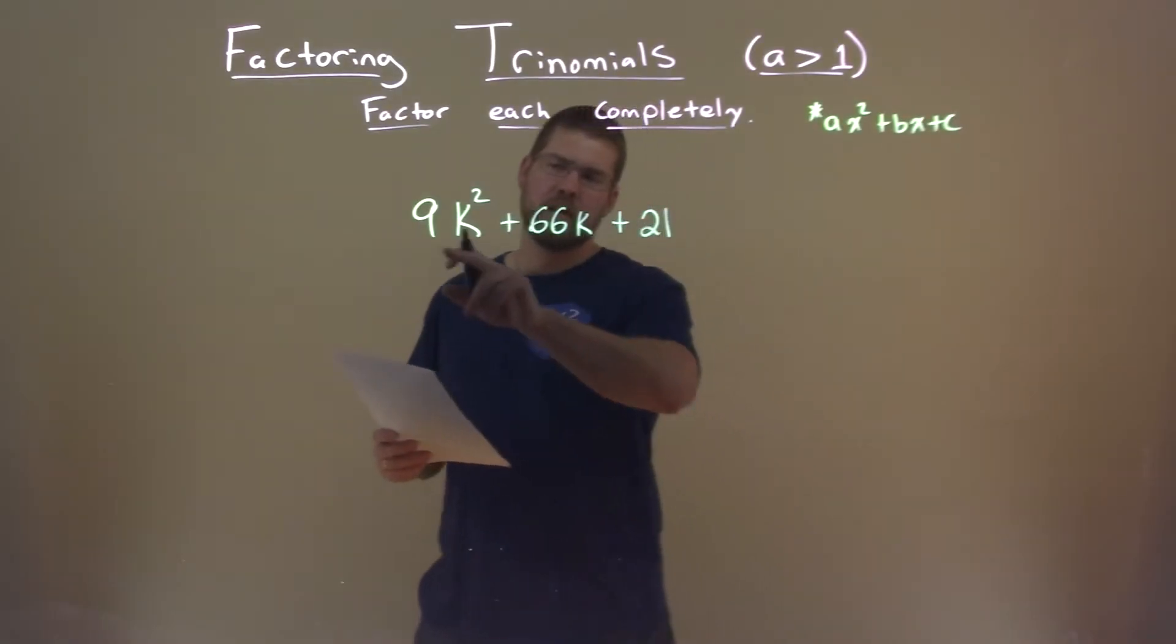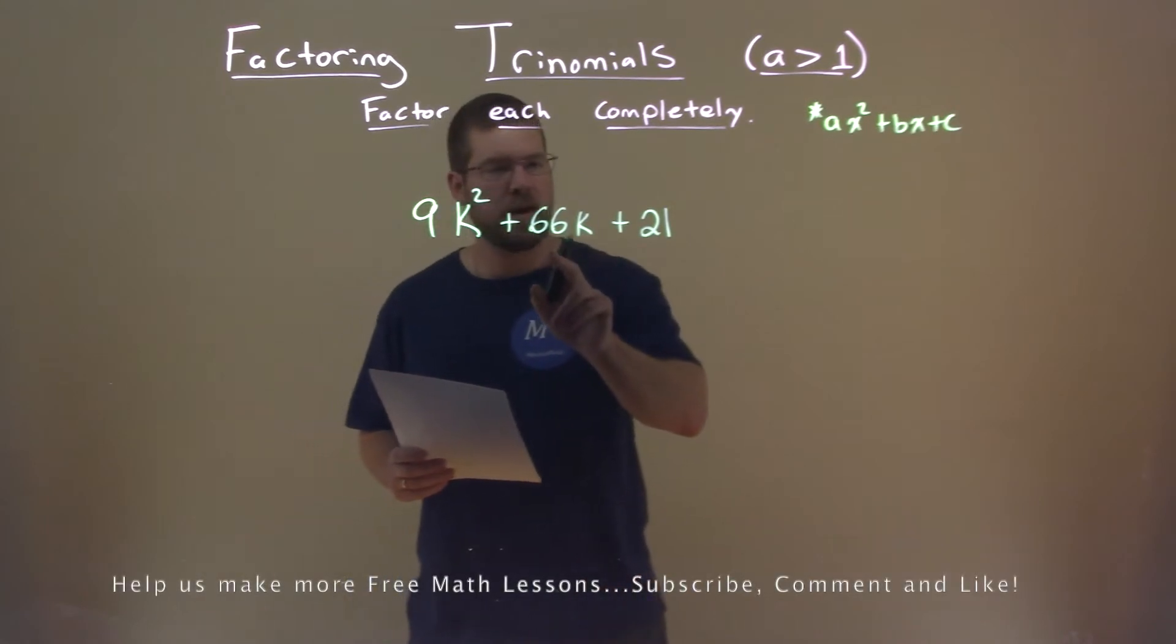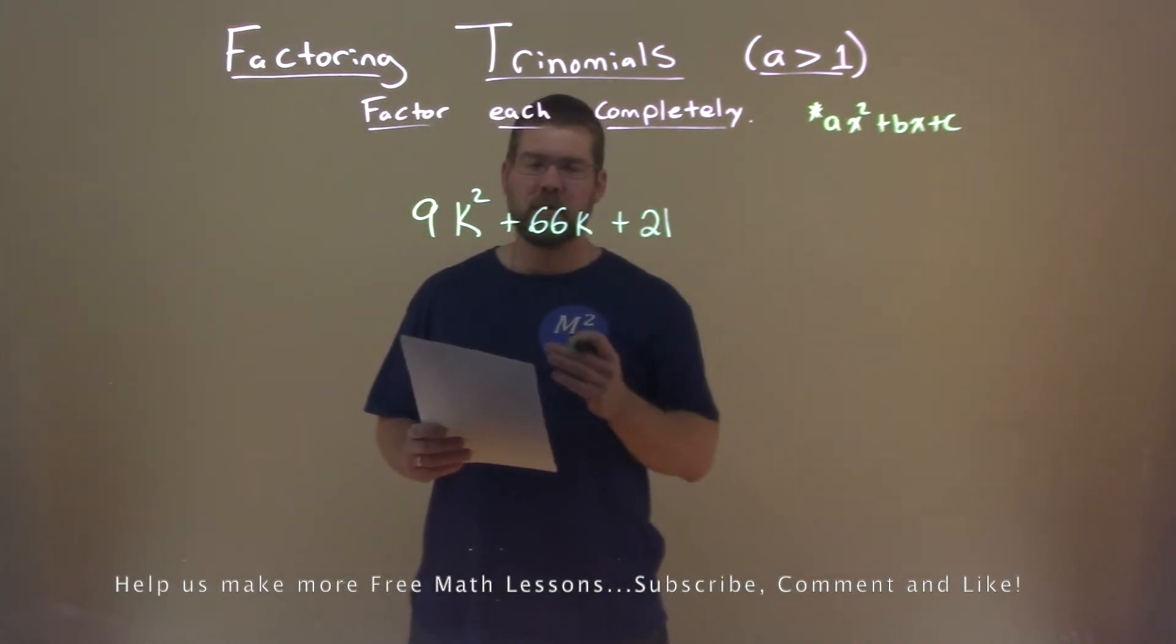We're given this problem here, 9k squared plus 66k plus 21, and we need to factor this completely.